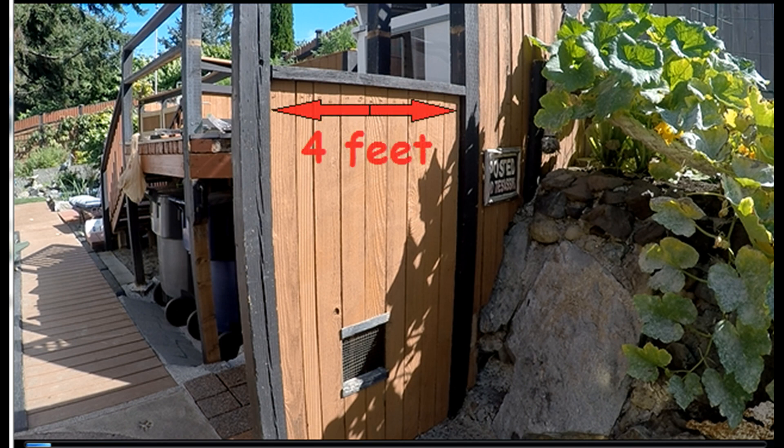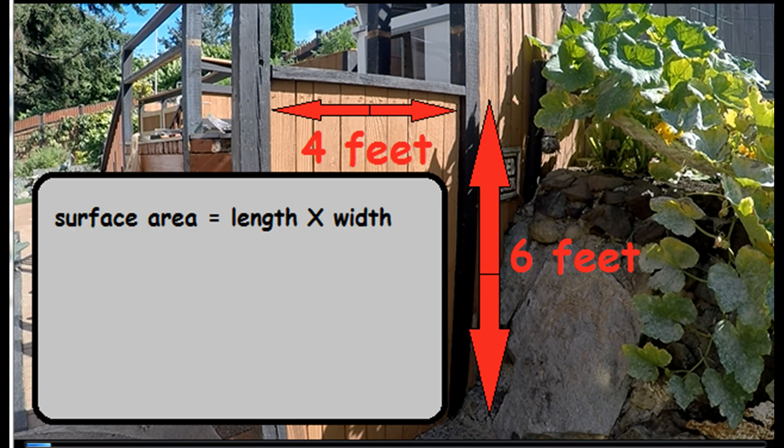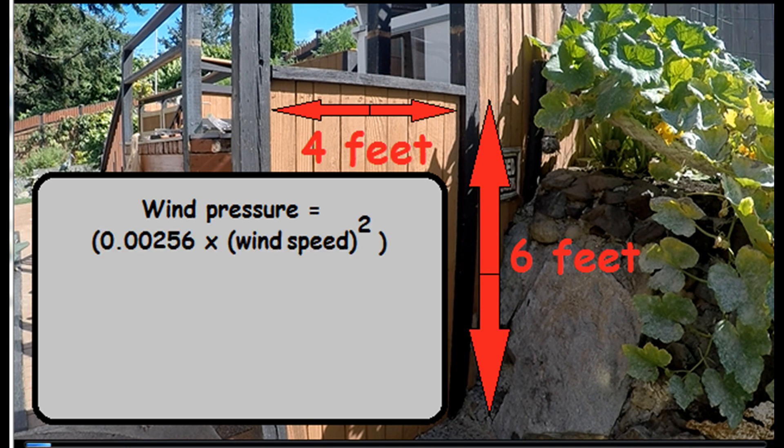First, we have to know the surface area of the fence boards. In this example, our fence is 4 feet wide and 6 feet high. Surface area is length times width. So we have 24 square feet of fence. And there's actually a formula for calculating wind pressure. It's the wind speed squared times 0.00256. And that'll give you the pressure measured in pounds per square foot. So let's say we have a 40 mile per hour wind. This will give you a wind pressure of roughly 4 pounds per square foot.